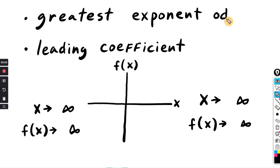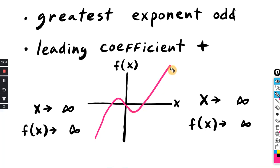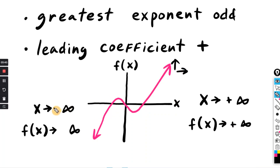Now we'll do: greatest exponent is odd and leading coefficient is positive. The graph generally goes up and to the right and down and to the left. As x goes to the right, that's positive infinity, and the y values or f of x also go to positive infinity. On the other side, as x goes to negative infinity, the graph travels down, so f of x also goes to negative infinity. The graph goes to the left and it goes down.